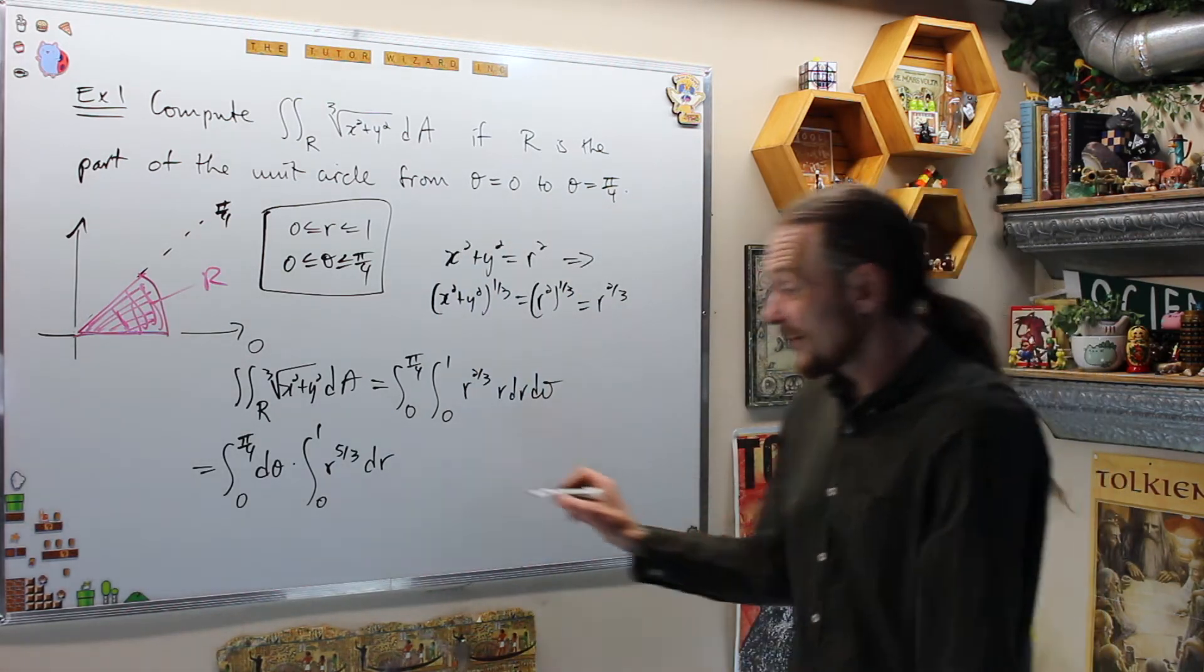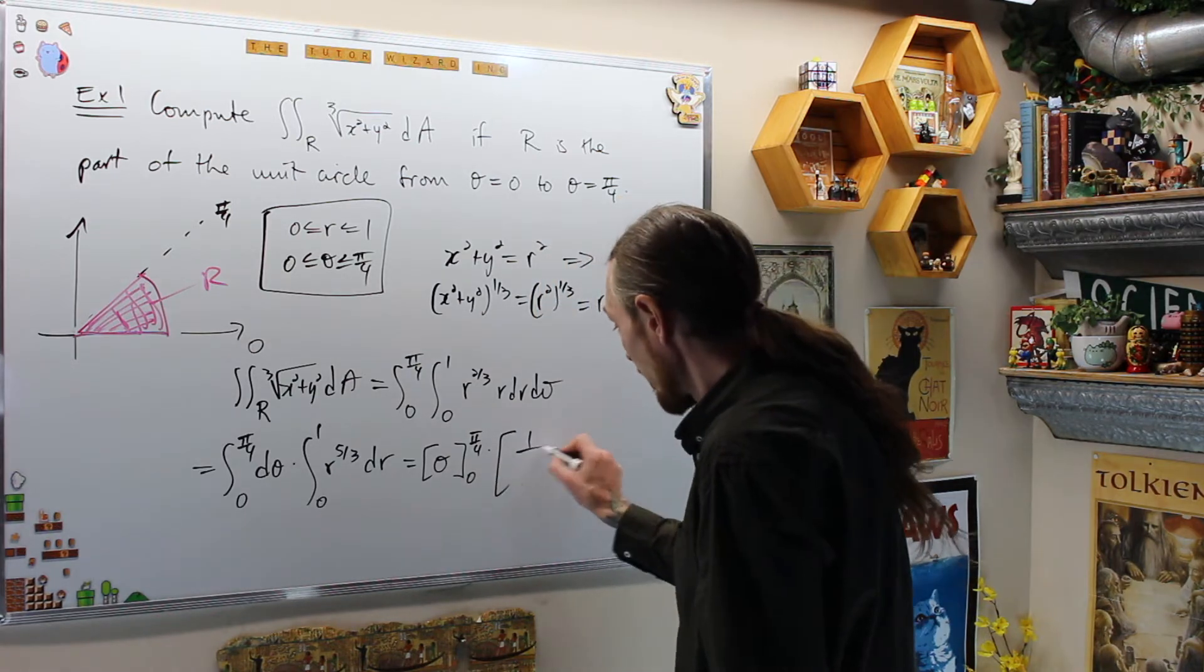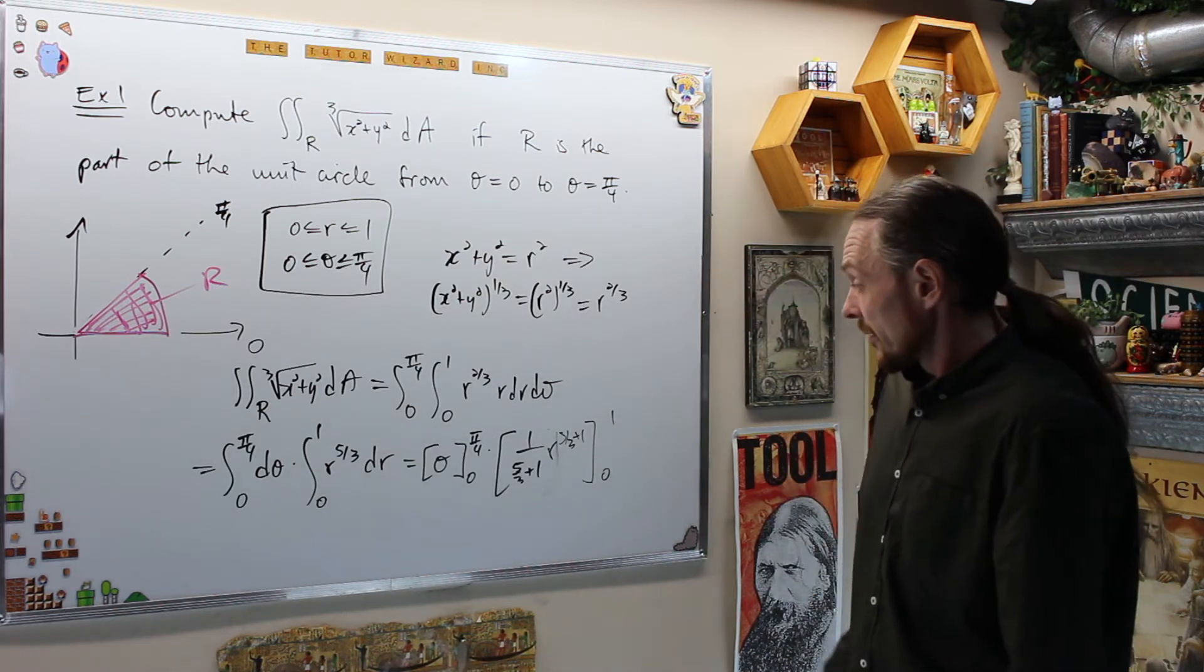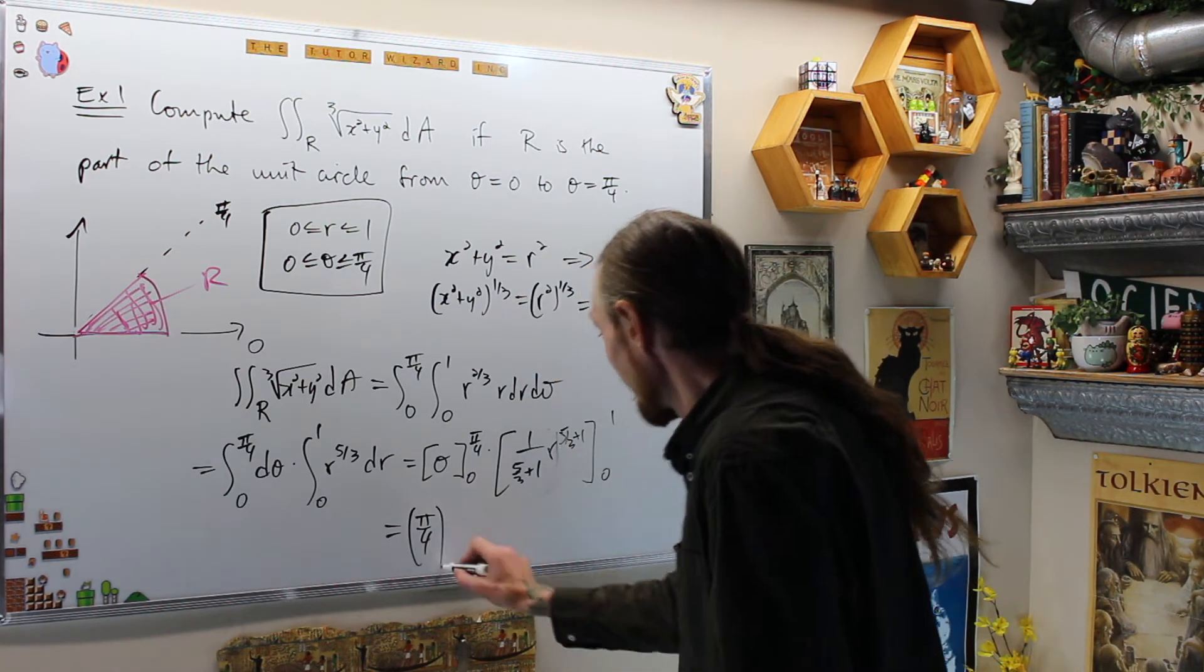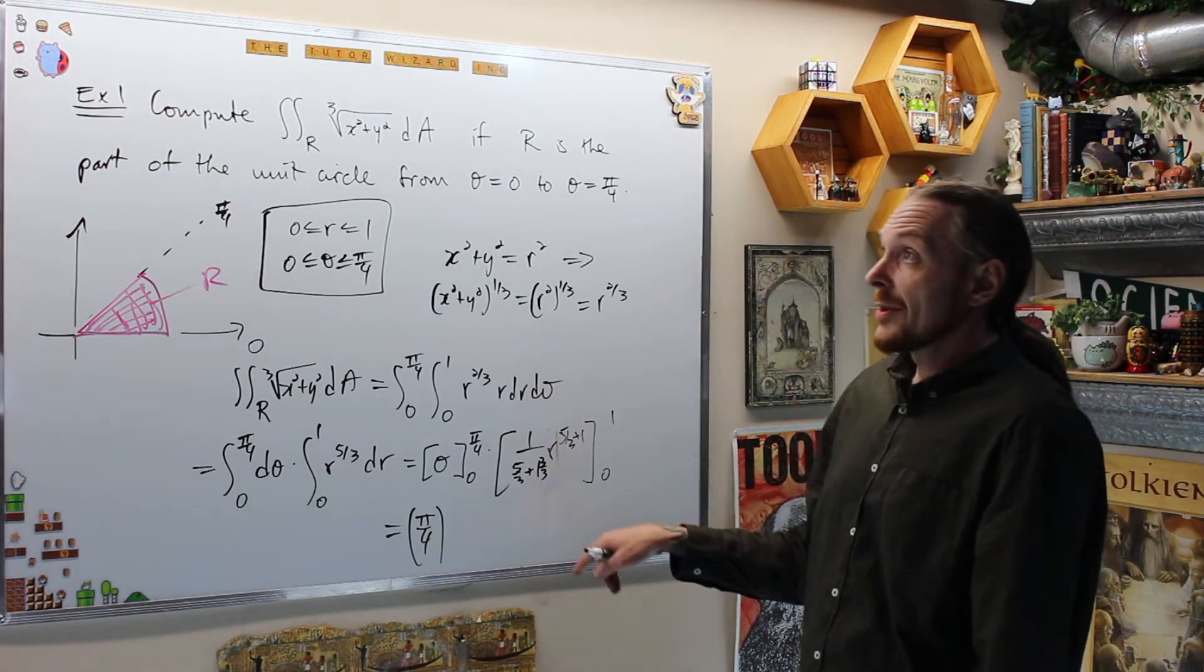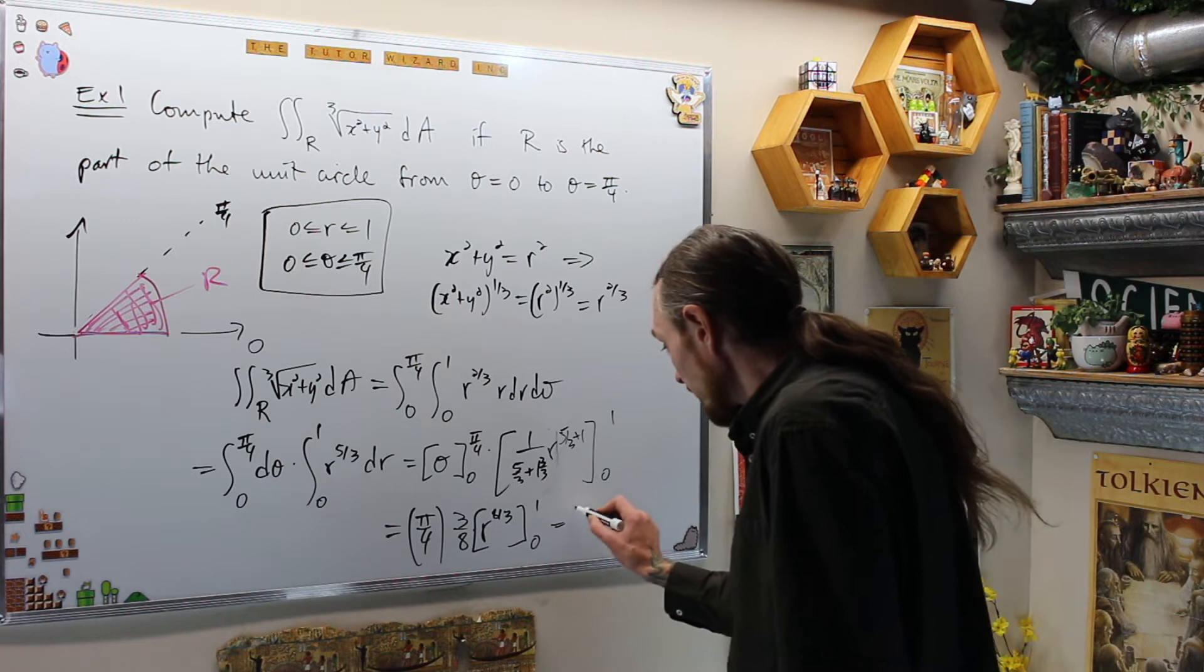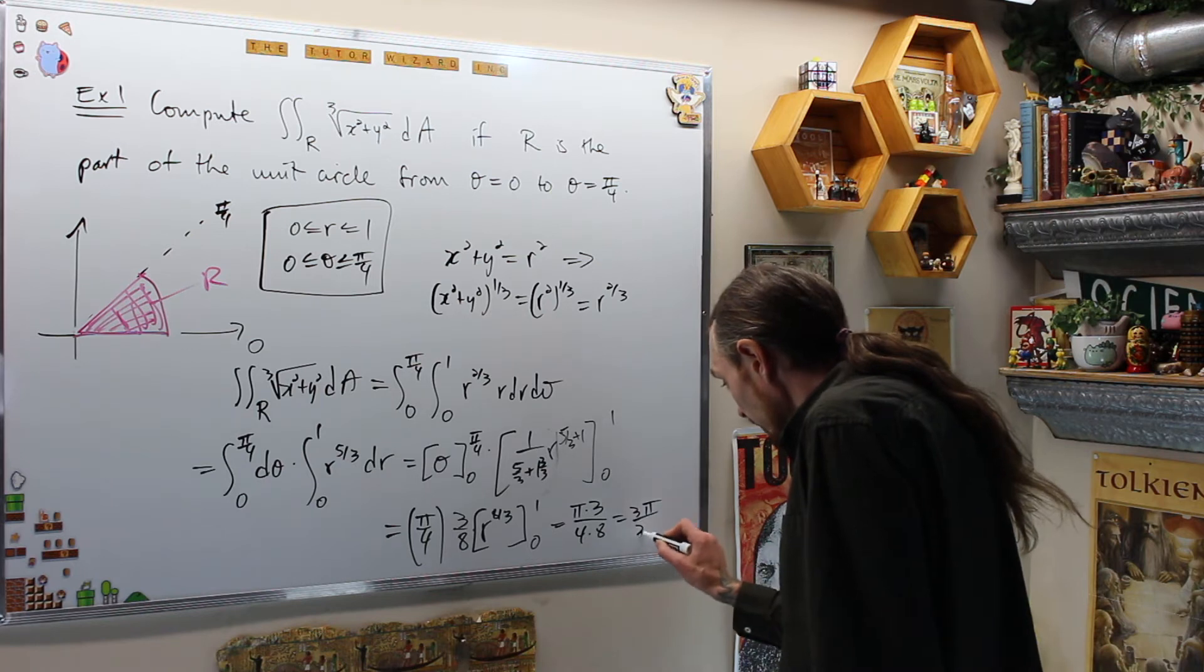Now, I take the antiderivatives. This gives me theta from 0 to pi over 4 times 1 over 5 over 3 plus 1 r to the 5 over 3 plus 1 evaluated from 0 to 1. That gives me pi over 4 times, right here is my favorite dirty trick, 3 over 3. And then I get 8 over 3 reciprocated, which is 3 over 8 times r to the 8 over 3 evaluated from 0 to 1, which is going to give me pi times 3 over 4 times 8, which is 3 pi over 32.